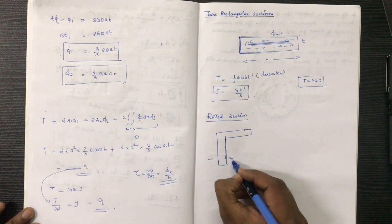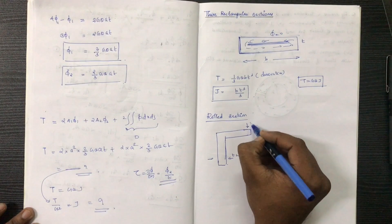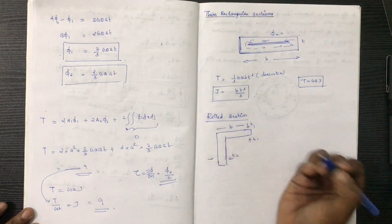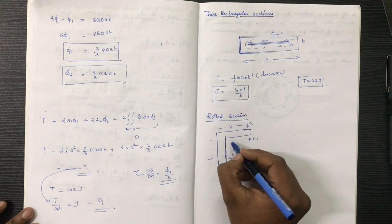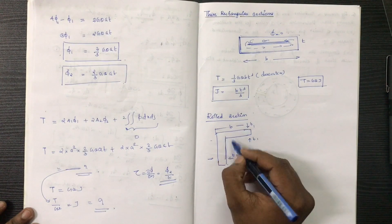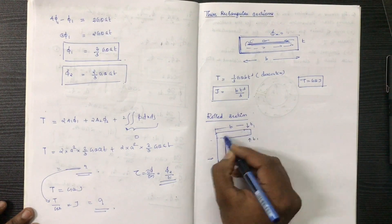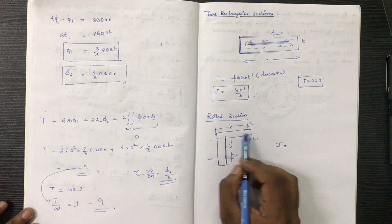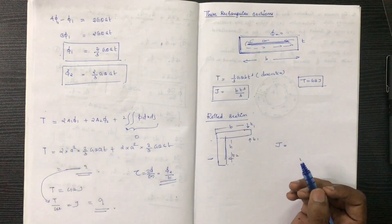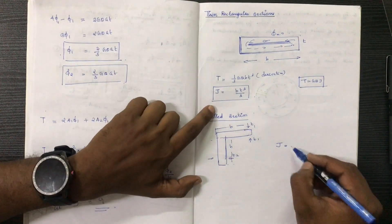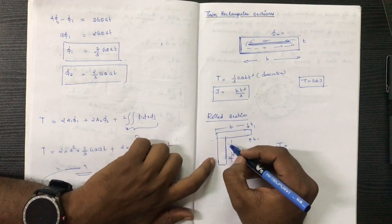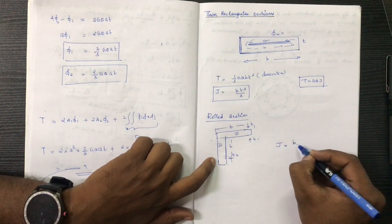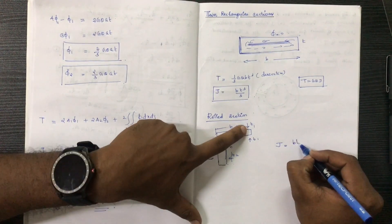Now the thickness is T2. Now the thickness is T1. Now the width is B. Now the height is B. Now the height is H.